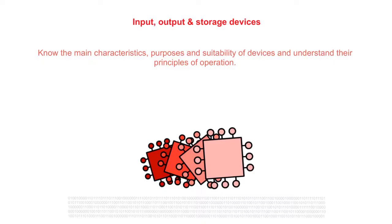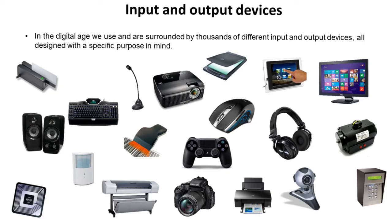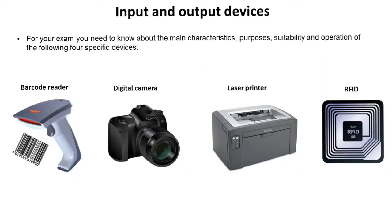By the end of this video you will know the main characteristics, purposes and suitability of devices and understand their principle of operations. In the digital age in which we live we're literally surrounded by thousands of different input and output devices, all designed with a specific purpose in mind. For your exam, the specification requires you to know the characteristics, purposes, suitability and operation of a barcode reader, digital camera, laser printer and RFID tags. We're going to go through each of those now.